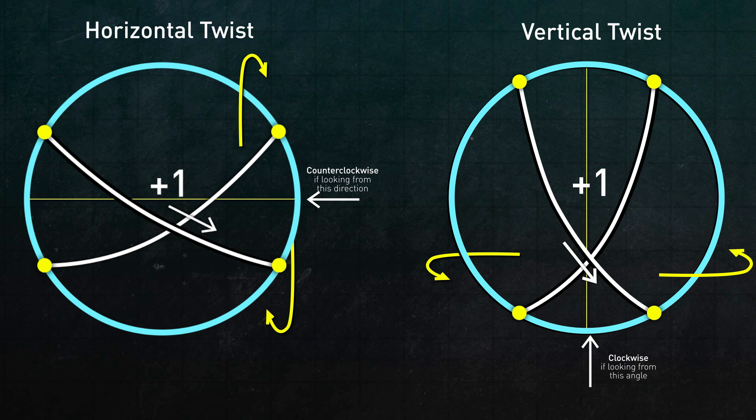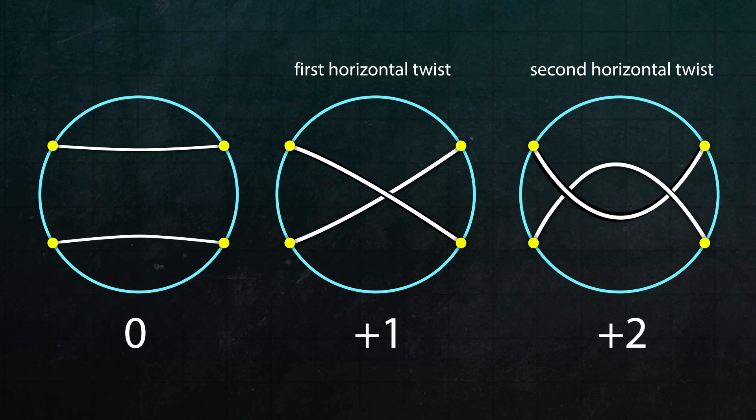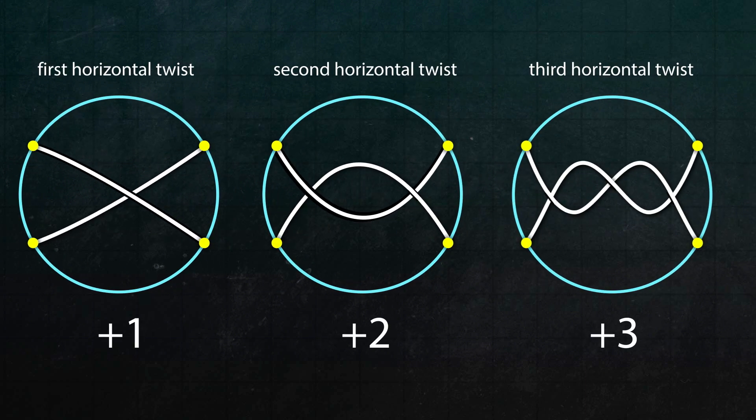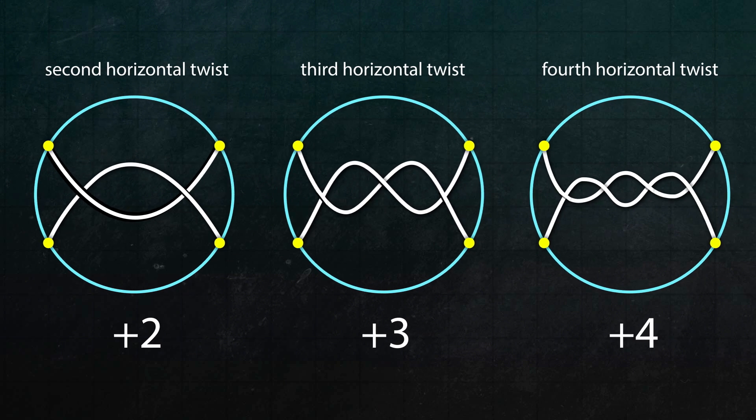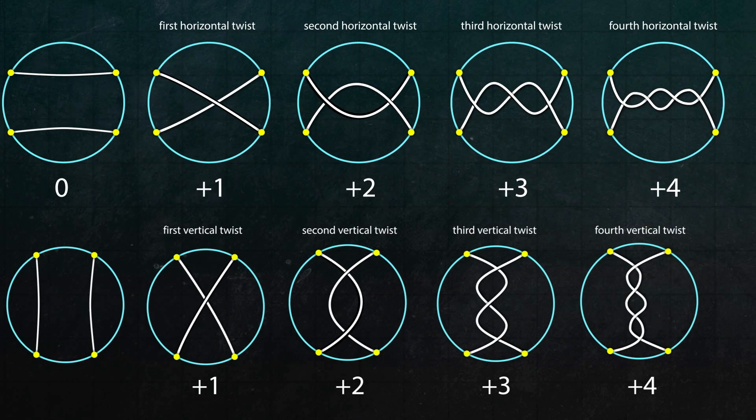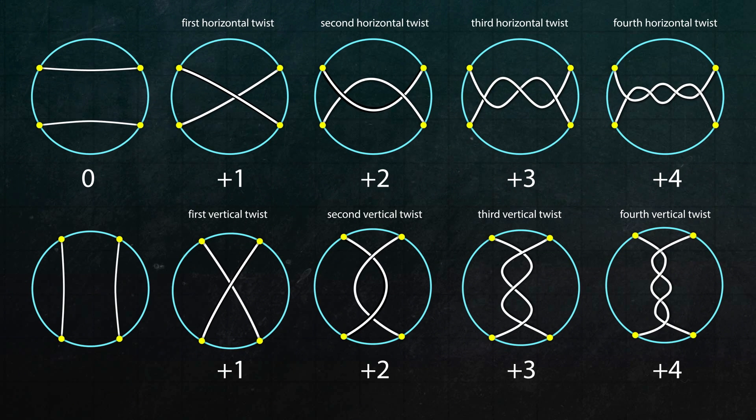Now, using these two moves, we can create tangles which have their own number. For example, the tangle you get after two horizontal twists corresponds to the number two. Or if you do three twists, you get three, four twists, you get four, and so on. Similarly, you can do two, three, four more vertical twists too. But it gets interesting when we alternate or combine the moves.